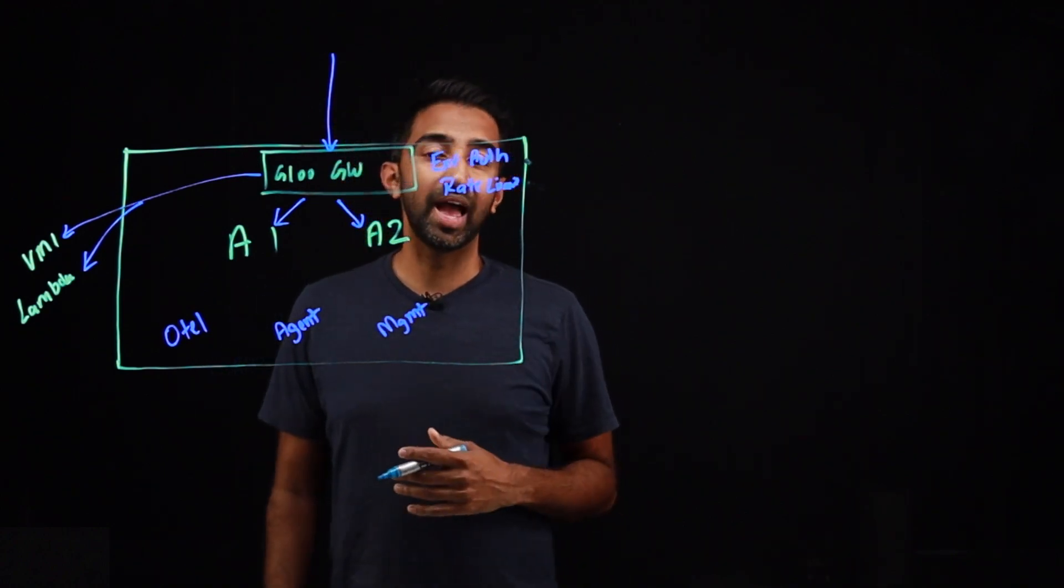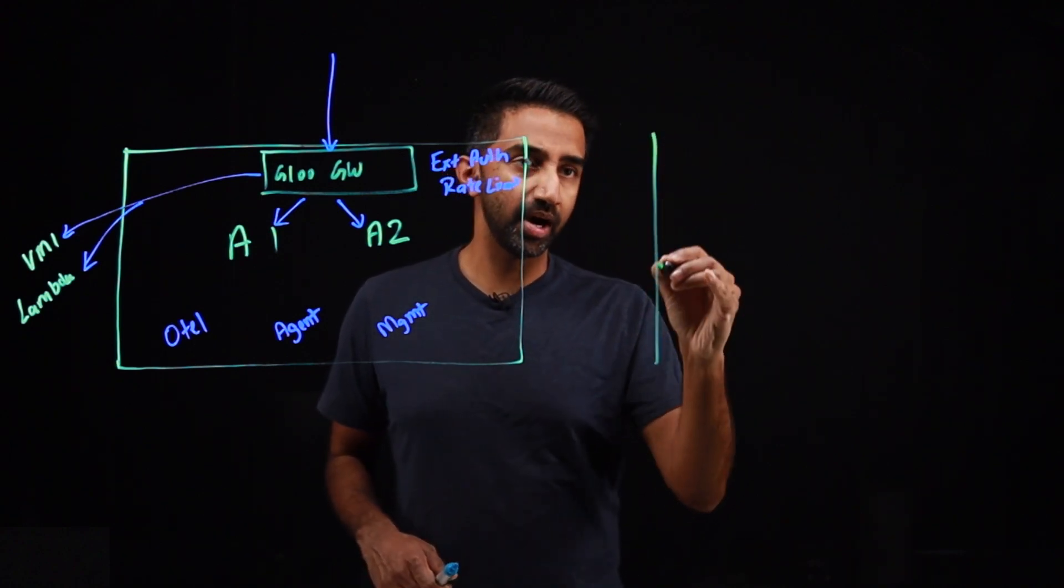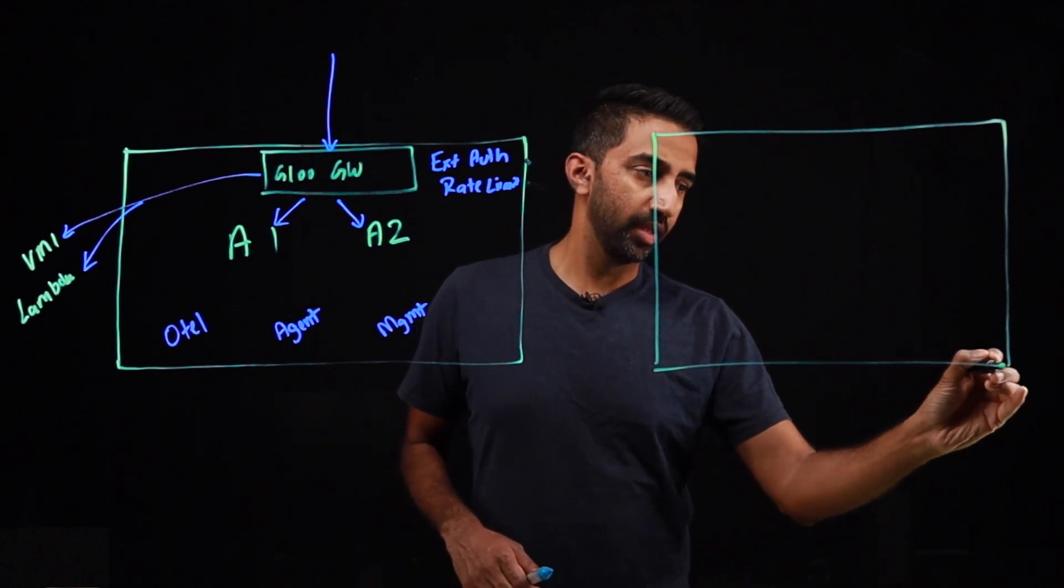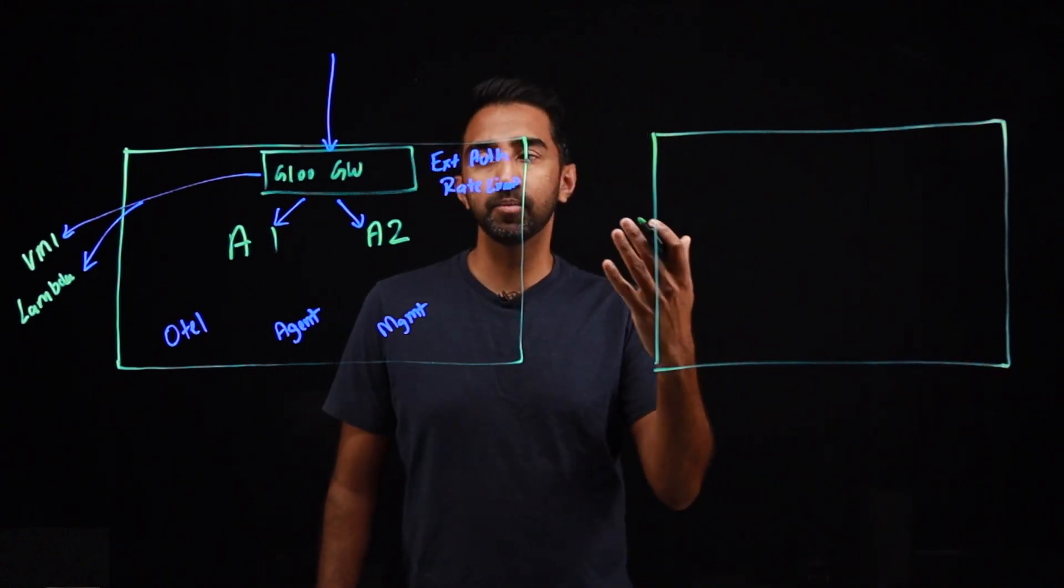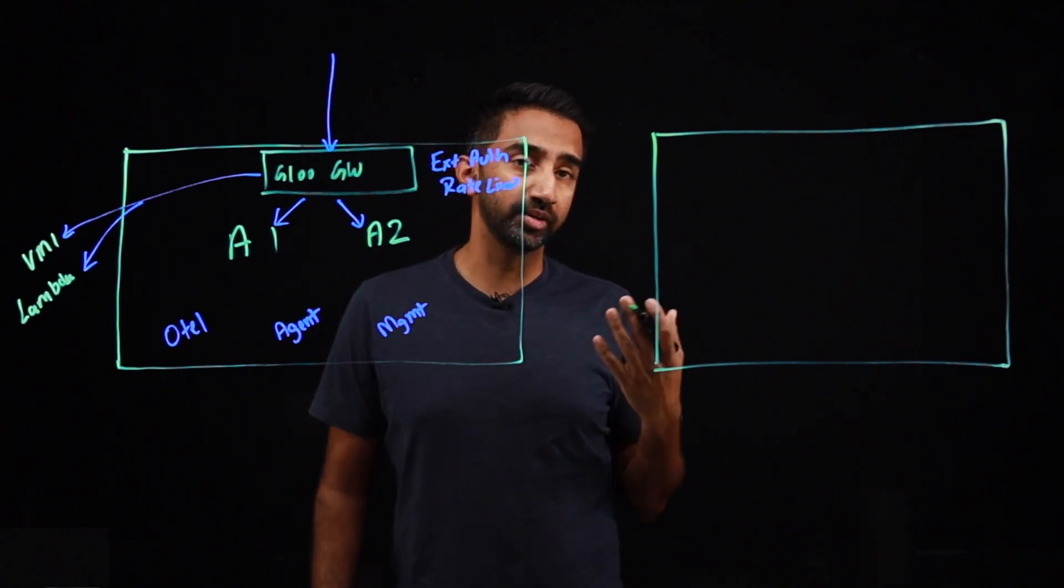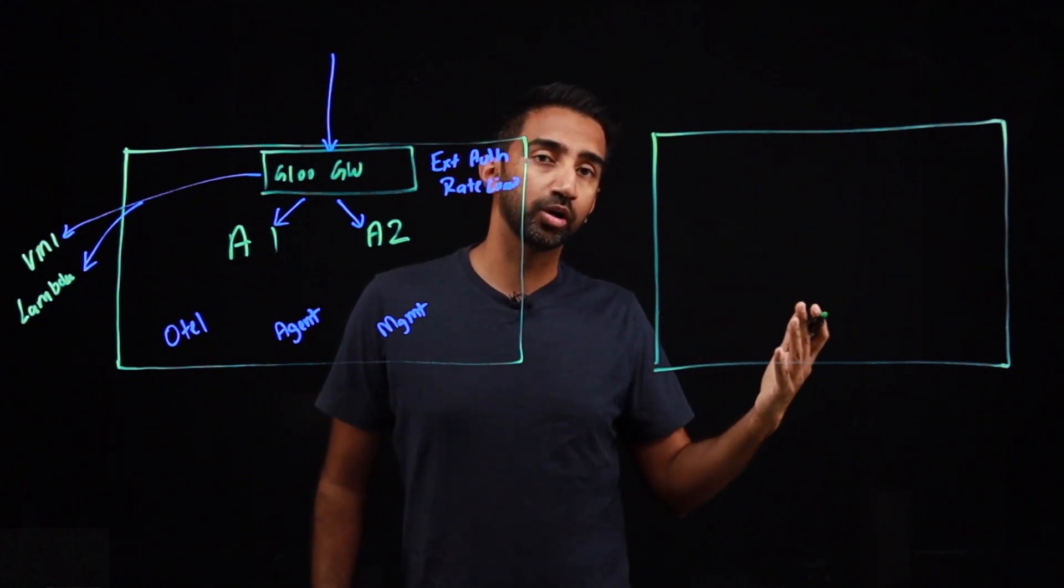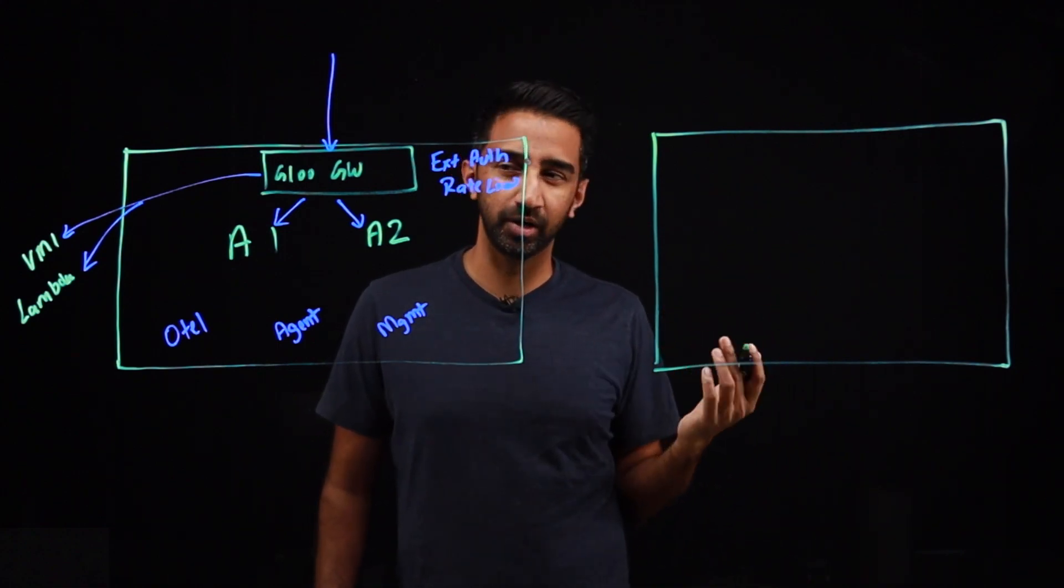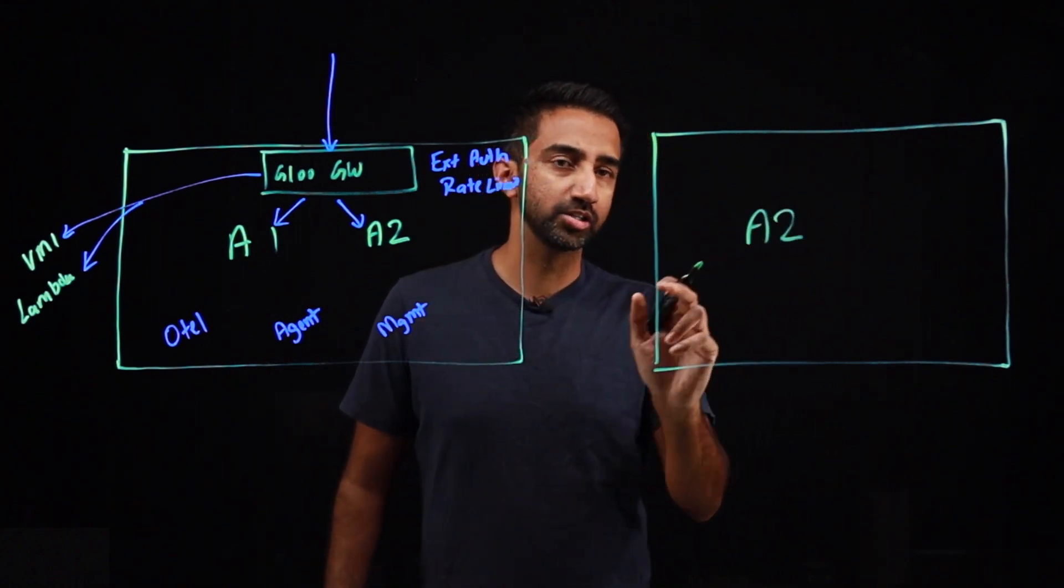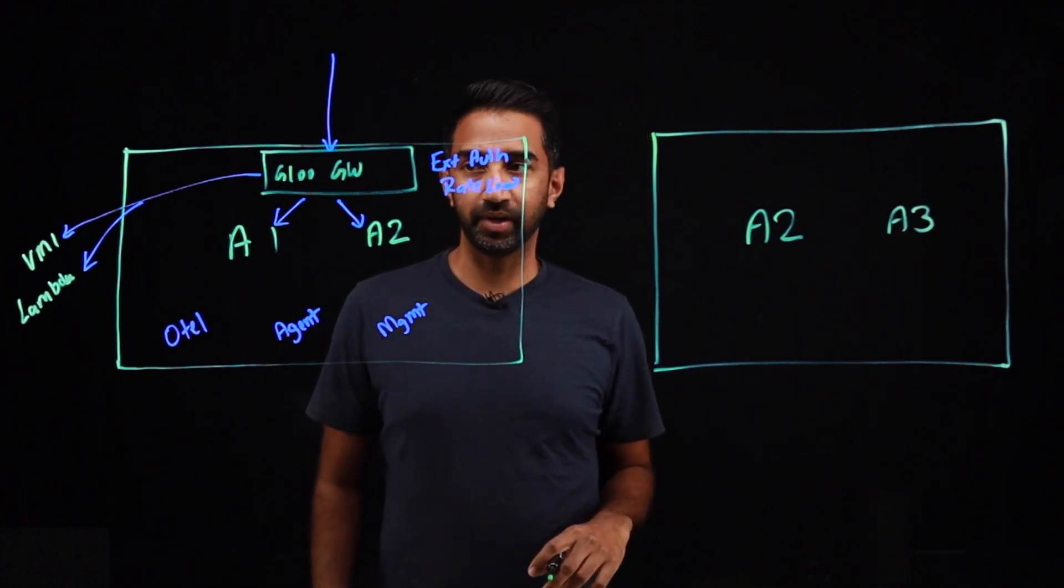Next, let's add another cluster. So again, I'll draw another box to represent my second cluster. And this cluster can have the same workloads that I have deployed on the first cluster for HA or DR purposes, or it could have new workloads that you might want to introduce for canary purposes. So let's just say I have A2, again, replicated across both clusters. And then I have new workloads as well, which I'll represent with A3.